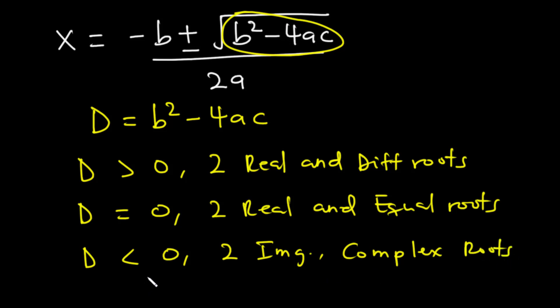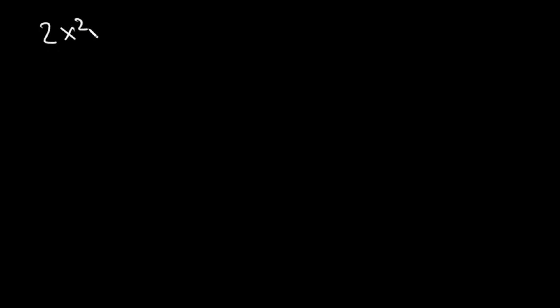Given some quadratic equations, we should be able to calculate the discriminant and describe the nature of its roots. Let's try this together. Given the quadratic equation 2x squared minus x minus 1, what is the discriminant of this equation, and what is the nature of its roots?